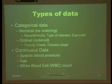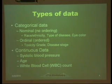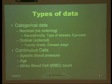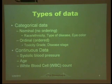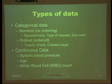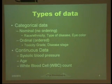On the other hand, continuous data also exists. For example, blood pressure, age, or white blood cell count — those are continuous data. In this talk, we will focus on categorical data, especially binary outcomes.